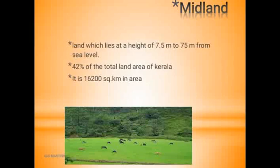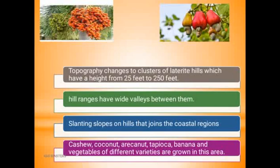This midland has laterite hills with a height from 25 feet to 50 feet. There are a lot of chengal trees in this country. The most common crops are cashew, coconut, areca nut, tapioca, and banana.